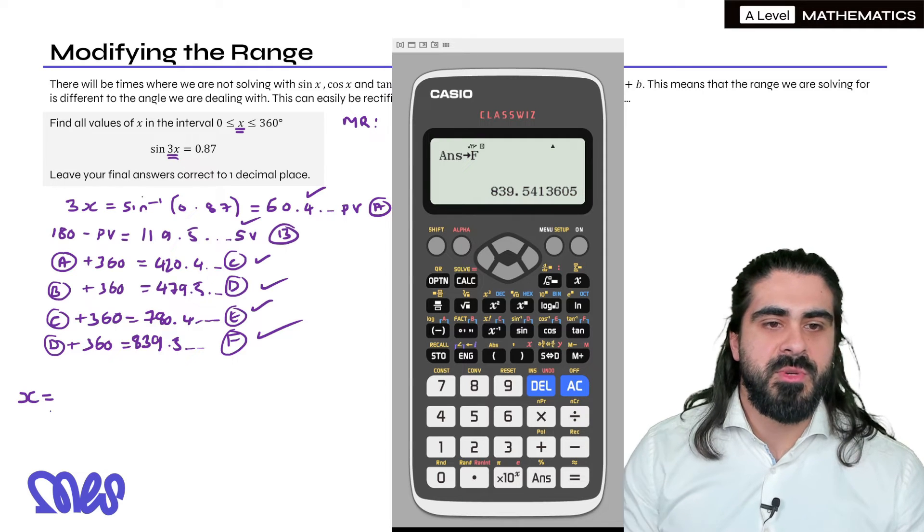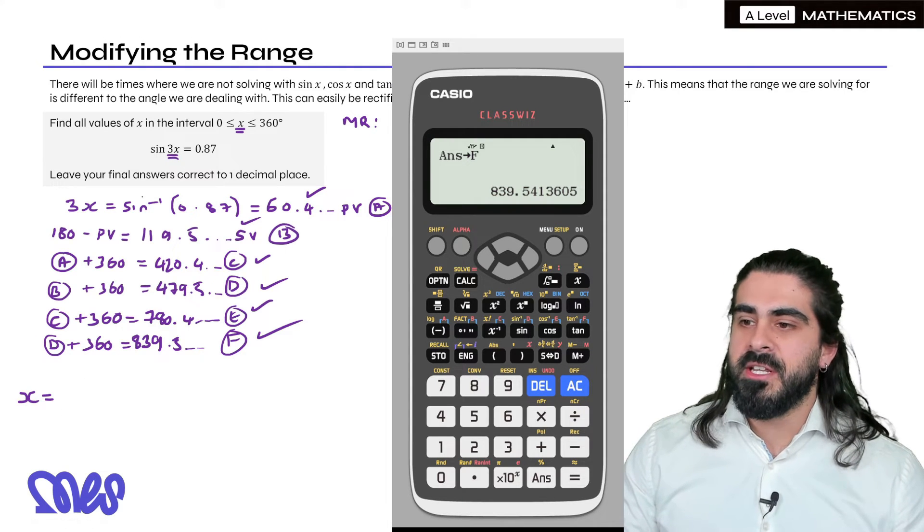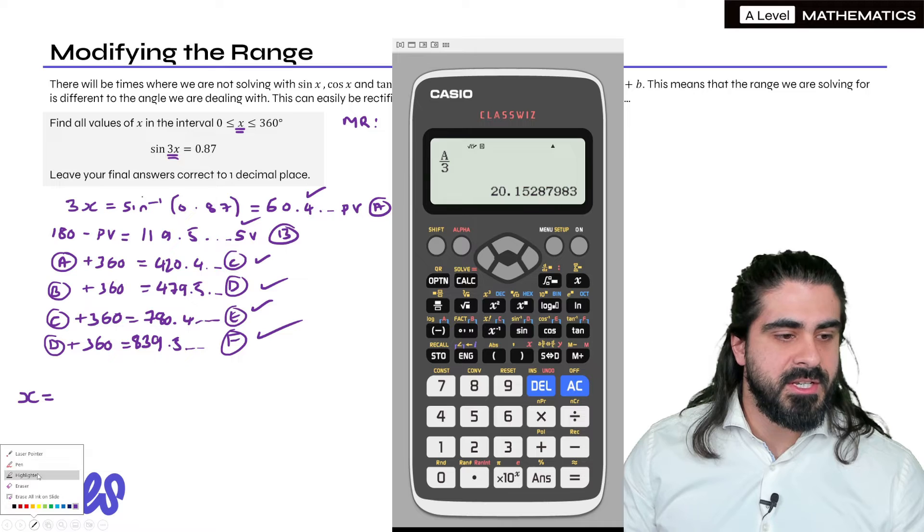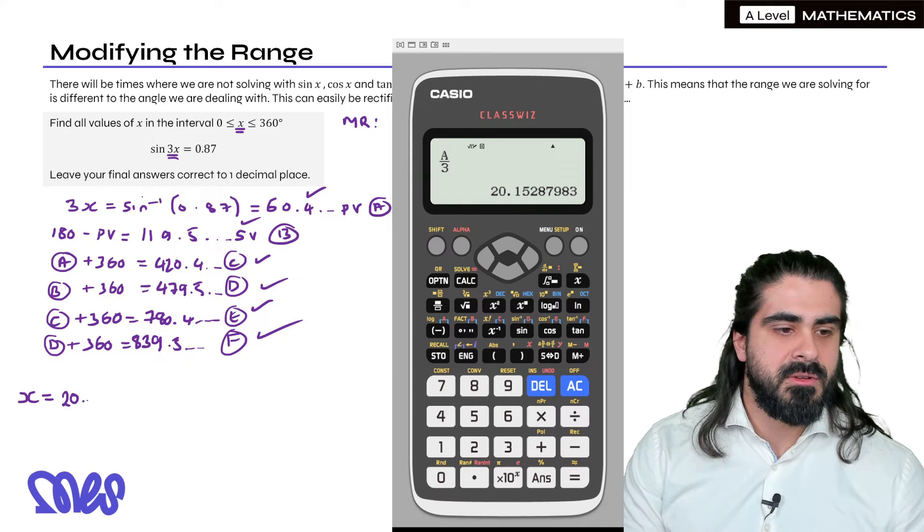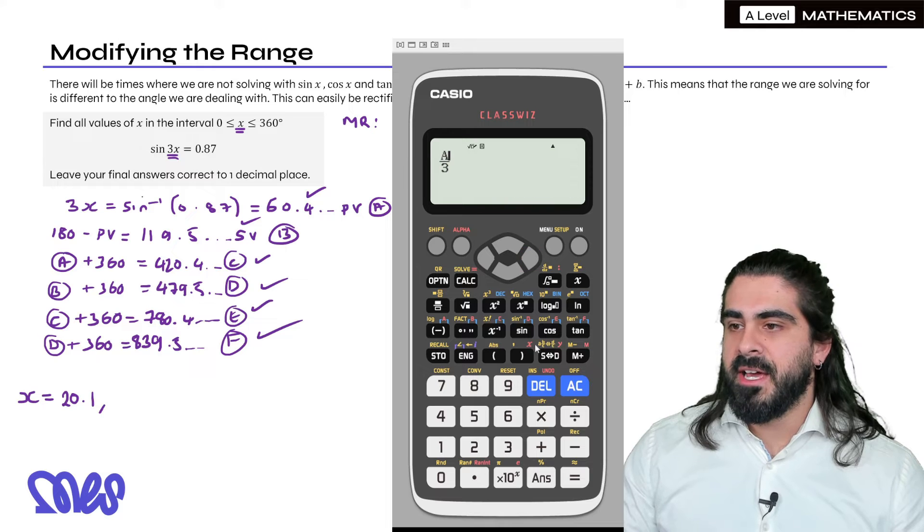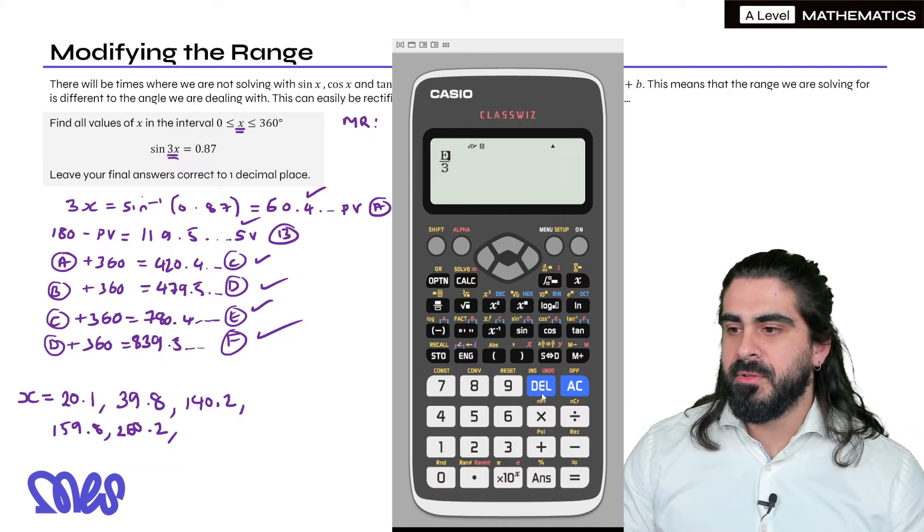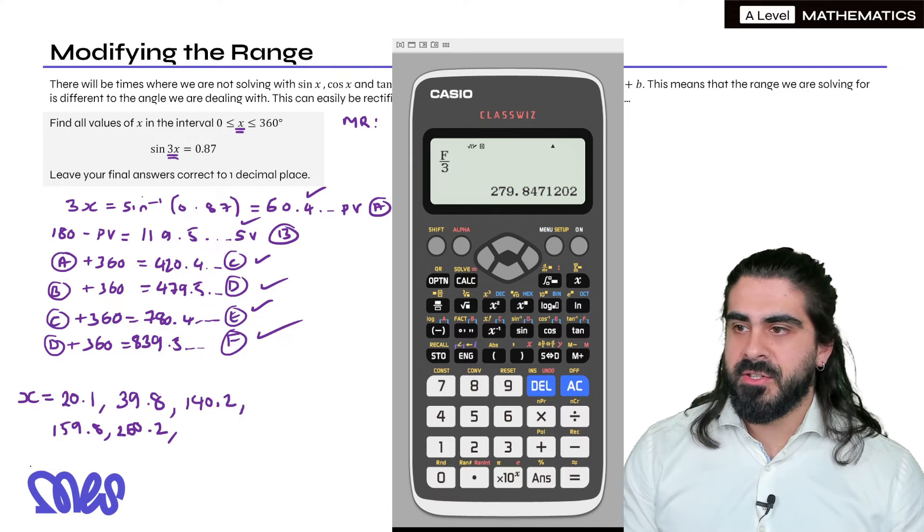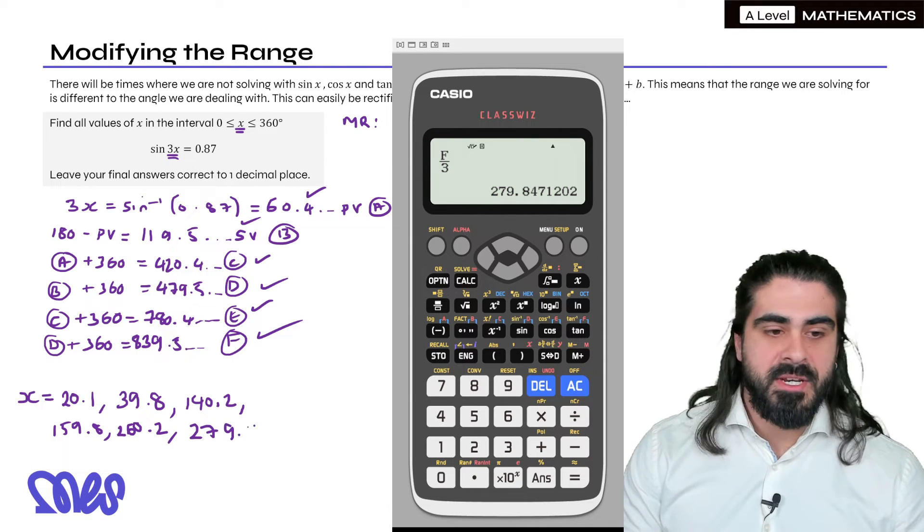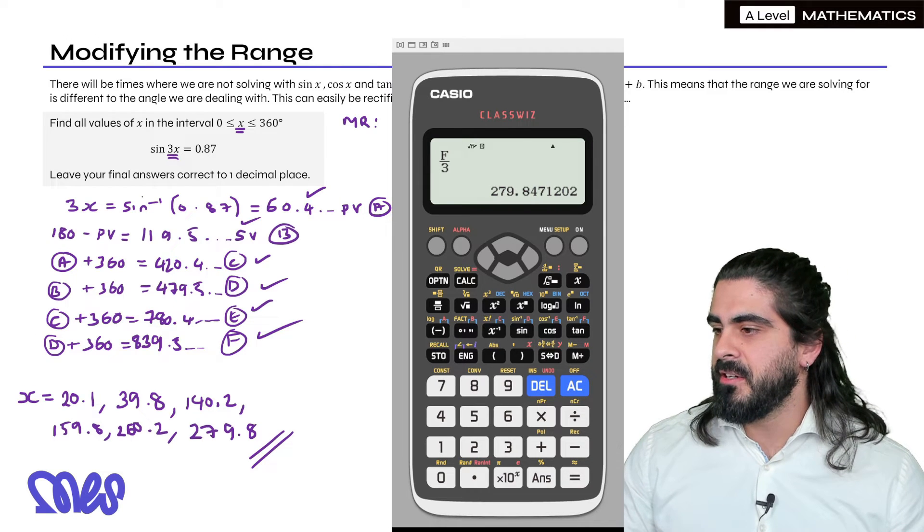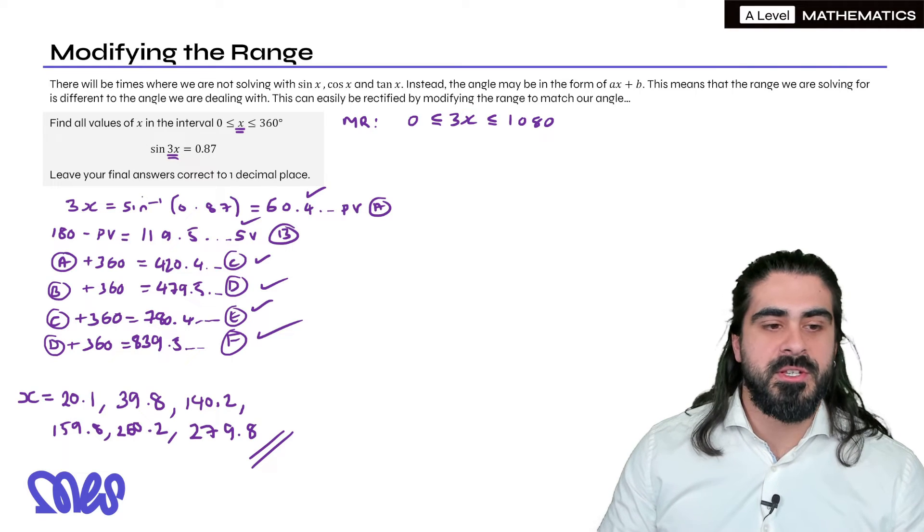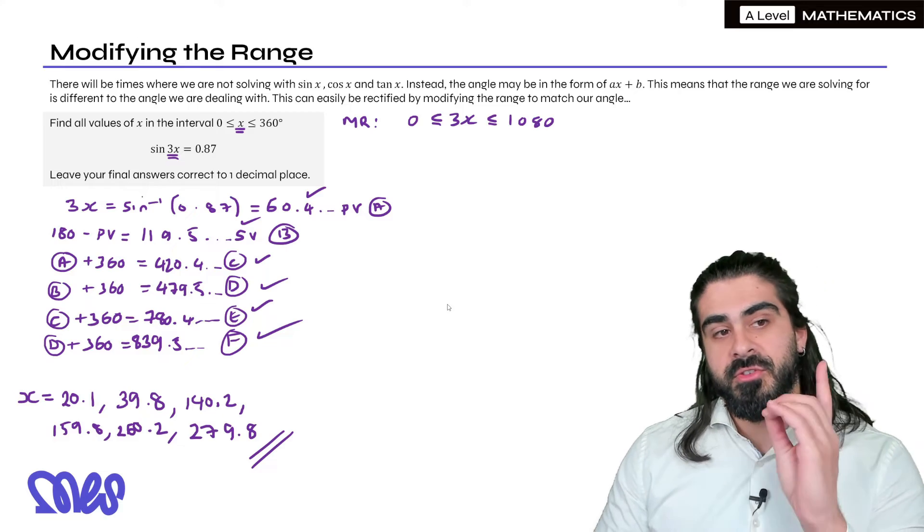So now the last thing we need to do is divide all those numbers by 3. And this is where you really save some time. So we're going to do A divided by 3, and we're going to round it to one decimal place. So we've got 20.1. Then I'm going to do B. You just go ahead and just change the letters. And I'm going to do it for all the rest. And finally we get to F divided by 3. And that gives us 279.8. And if I remove the calculator now, you can see that all the previous answers were within the modified range, but all my final answers after divided by 3 are between 0 and 360. Okay, so you've learned the storing method.